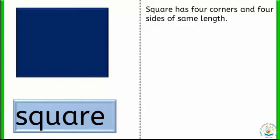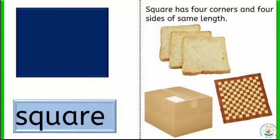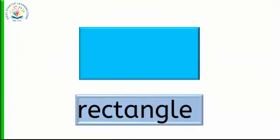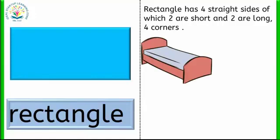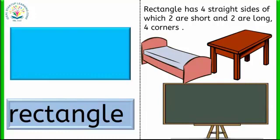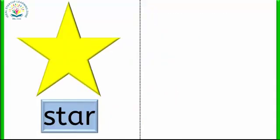Objects with square shapes are bread slice, box, and mat. Rectangle. Rectangle starts with the letter R. Rectangle has four straight sides, of which two are short and two are long, and rectangle has four corners. Objects with rectangle shapes are bed, table, and blackboard. Star. Star starts with the letter S.